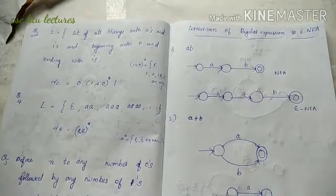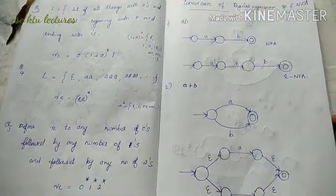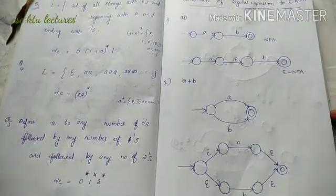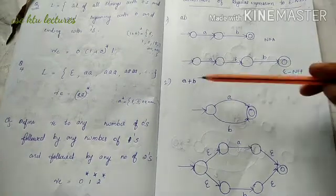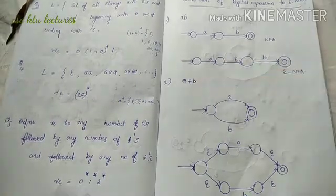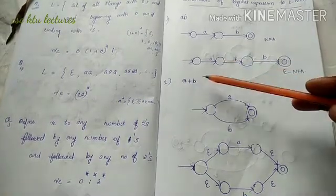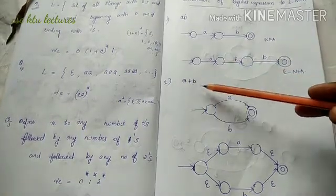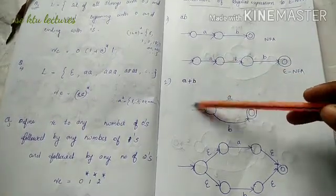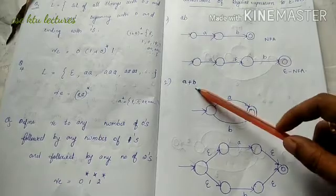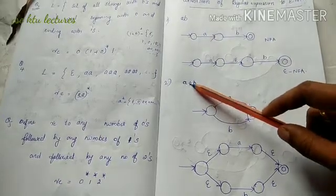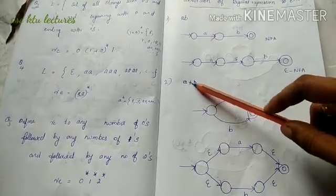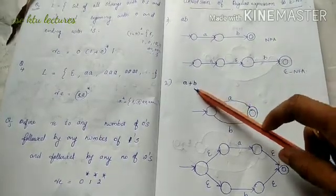The next regular expression is A plus B — that is A+B. The plus sign means union.